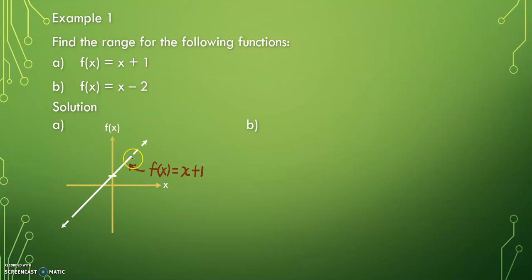So in order to determine the range, we will refer to the y-axis. Since the graph keeps going, we can say that the range will be from negative infinity.